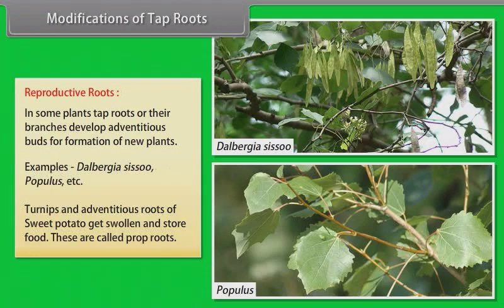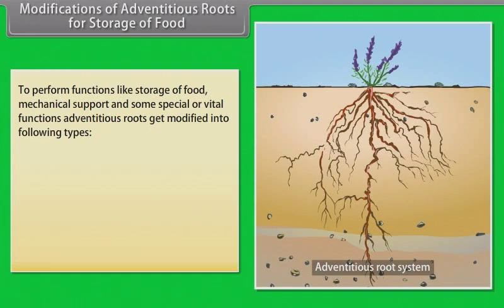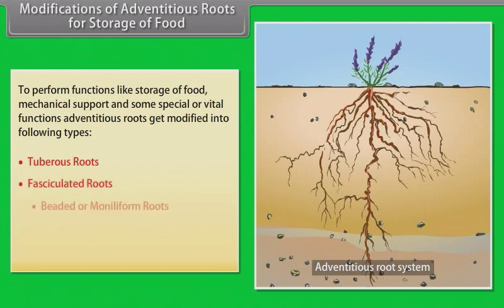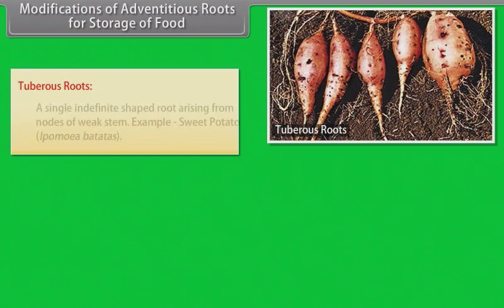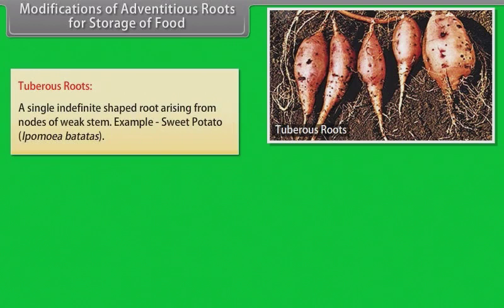Turnips and adventitious roots of sweet potato get swollen and store food. Modifications of adventitious roots for storage of food: To perform functions like storage of food, mechanical support, and some special or vital functions, adventitious roots get modified. Tuberous roots: a single, indefinite-shaped root arising from nodes of a weak stem. Example: sweet potato.